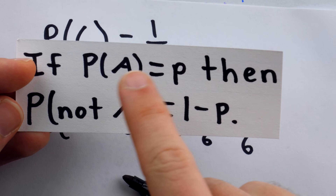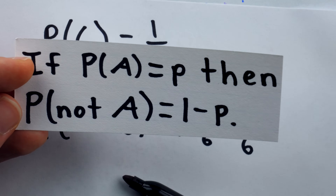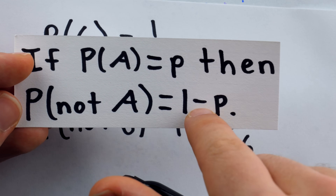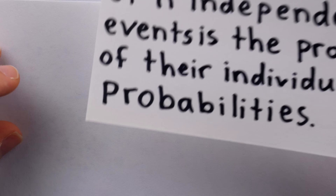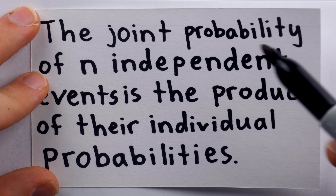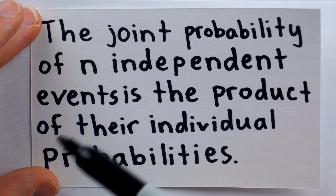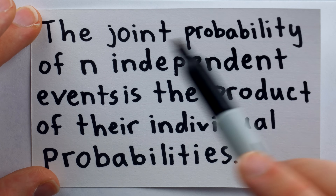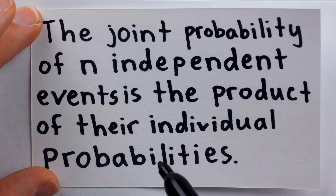When we're talking about an event, it can either happen or not happen, so together those probabilities need to add to one. The probability of an event not occurring is one minus the probability that it does occur. The other basic probability law that we need is this: the joint probability of n independent events — events that have no effect on each other — is the product of their individual probabilities.